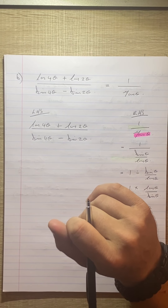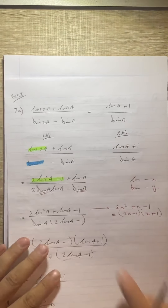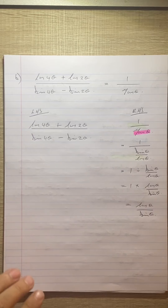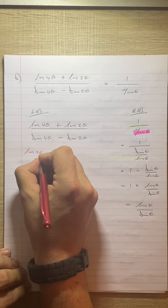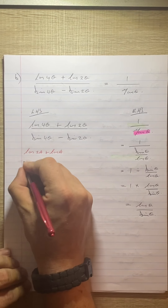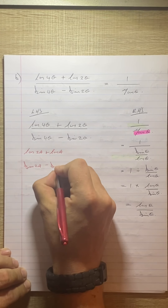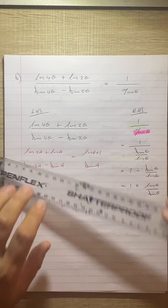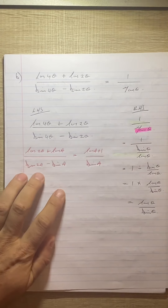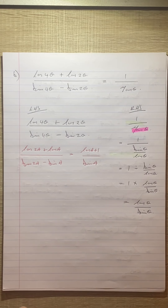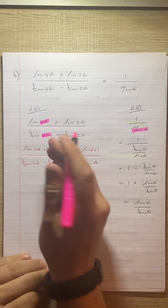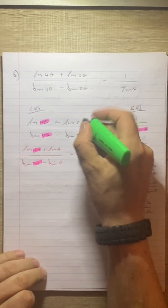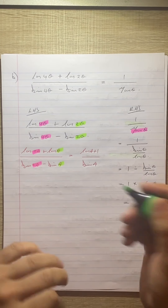It says we must use our result from question A. From question A we have: cos 2A plus cos A over sin 2A minus sin A equals cos A plus 1 over sin A. We need to find the link between the two expressions. Looking at the angles: we've got 4θ and 4θ matching 2A and 2A, then 2θ and 2θ matching A and A. So 2θ plays the role of A here.